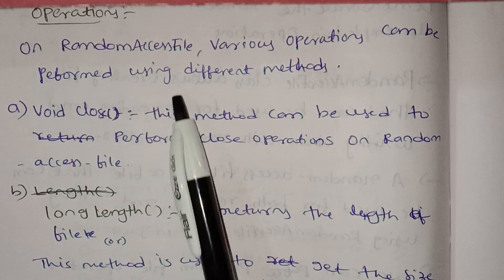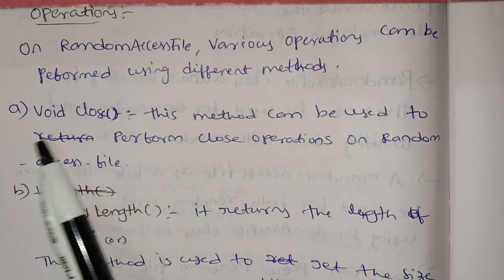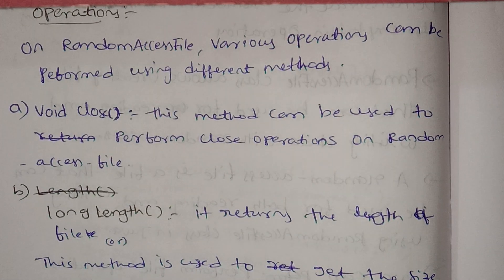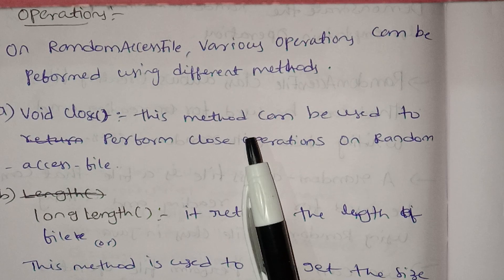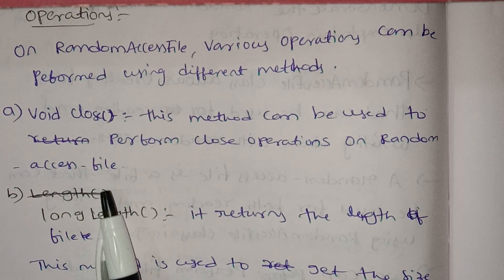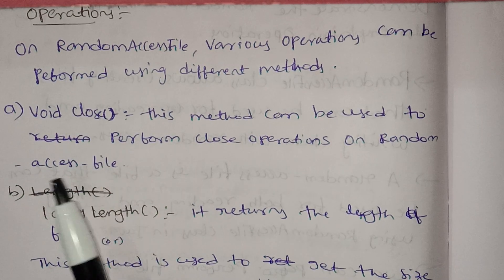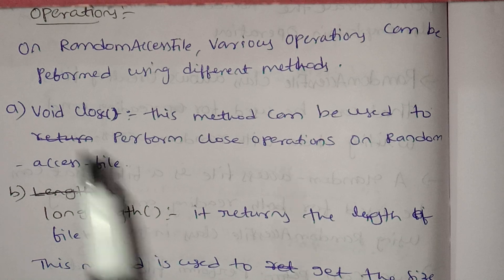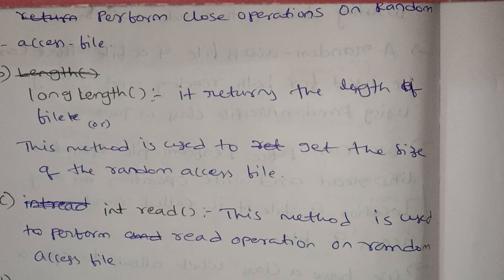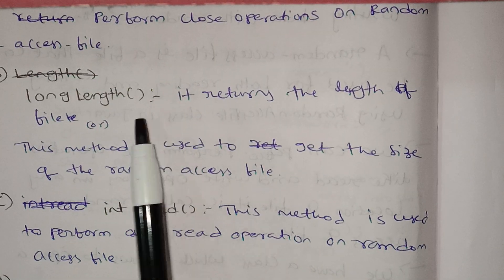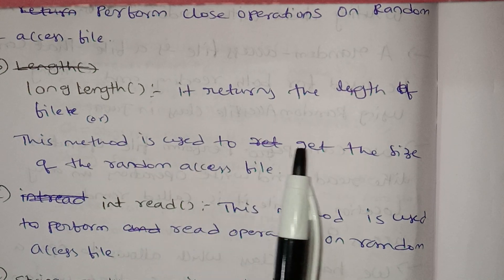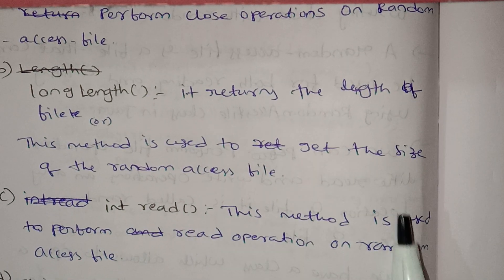The first method is close() — it has a void return type. This is the close method used to close the file. Next is long length() — this method returns the length of the file and is used to get the size of the random access file.